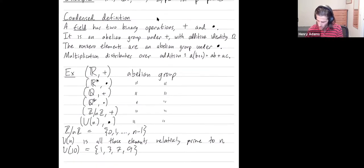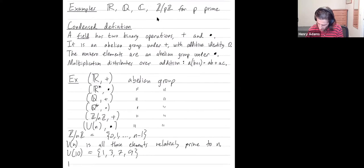However, for p prime, Up is all the numbers, and I should say all those numbers, at least one, that are relatively prime to n. You never want zero in a multiplicative group because one's your multiplicative identity and zero can't have a multiplicative inverse.